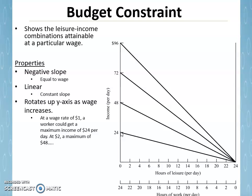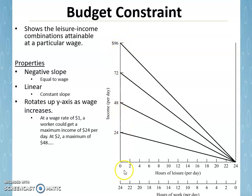In this case the wage is a dollar. If you look at a model like this, you can quickly derive the wage by taking the vertical intercept and dividing it by 24. For example, this particular budget constraint here — we can find the wage by taking $96 and dividing it by 24 hours of work, which would be $4 an hour.